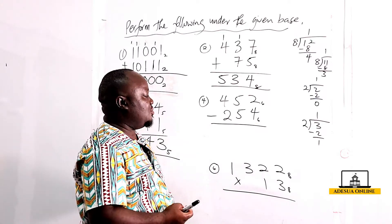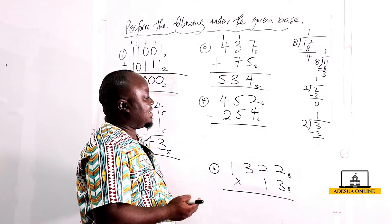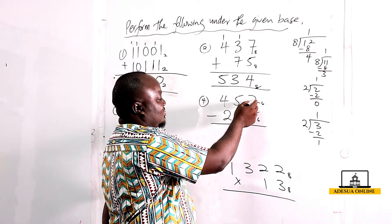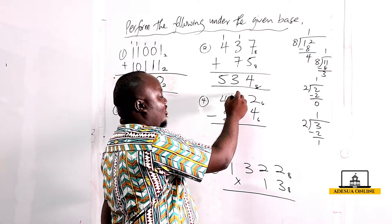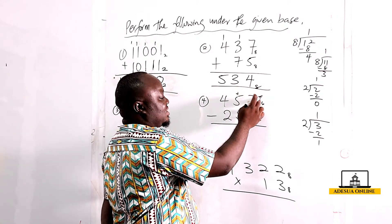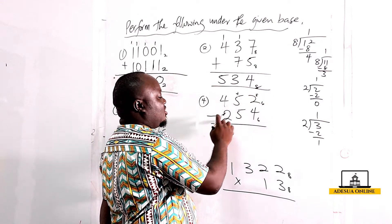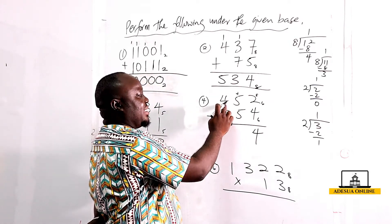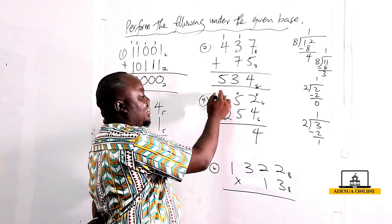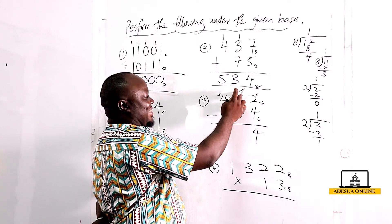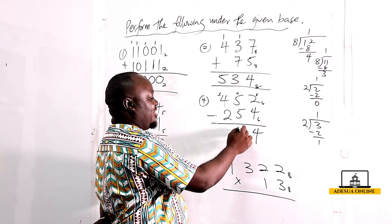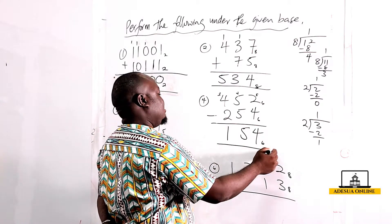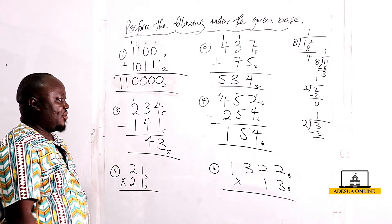Now question four — we are dealing with base six, so anything we borrow will be worth six. The first column: two minus four cannot be done, so borrow one from the next column, leaving it with four, and add six here making it eight; eight minus four is four. Next, four minus five cannot be done, so borrow one from the next column leaving three, and add six giving ten; ten minus five is five. Then three minus two is one. So we have 154 to the base six.